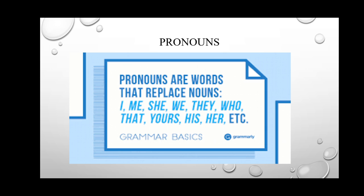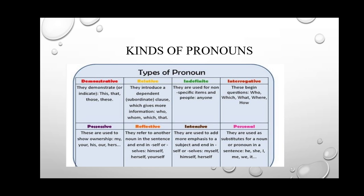There are some types of pronouns. First is the demonstrative pronoun — it indicates or points to something. For example: 'This is a cat', 'That was your book', 'Those are my flowers', 'These are your pencils' — all these indicate where a thing is.